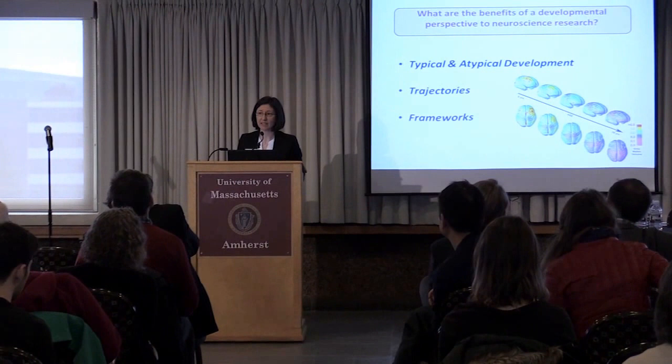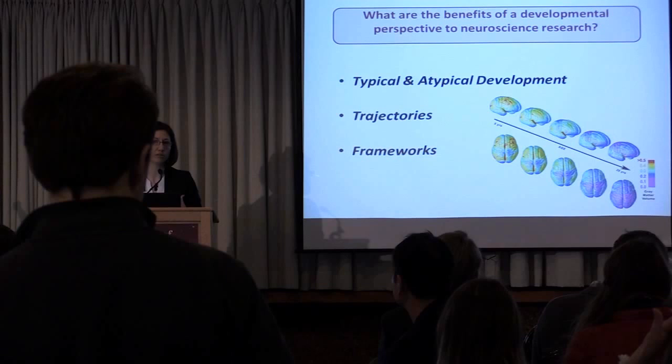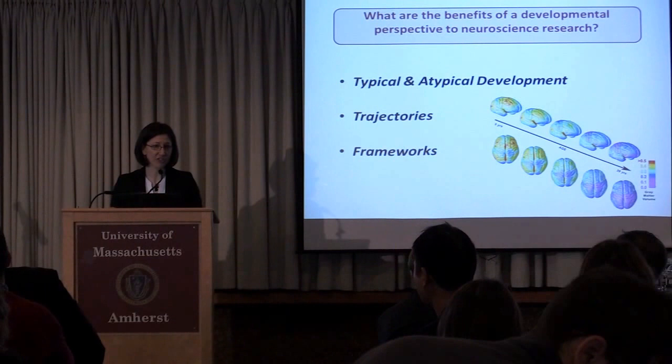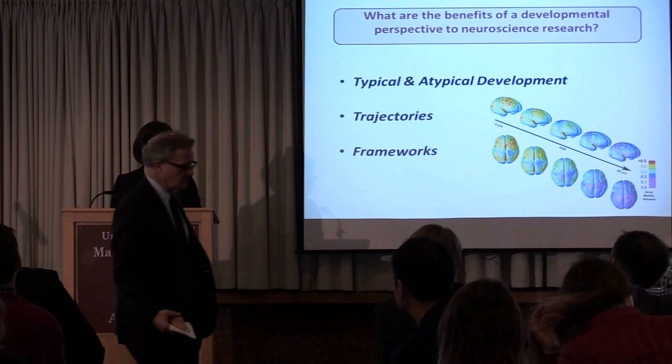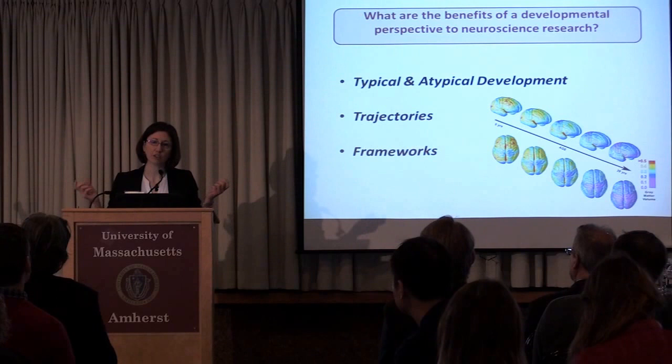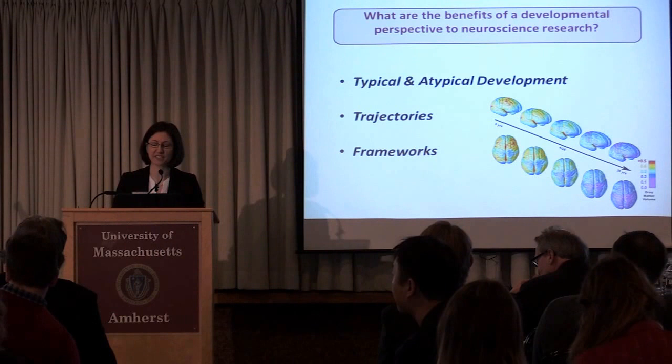One framework is understanding fundamental mechanisms of how typical adaptive functioning — cognitive, physical, social, and emotional development — emerges, and then we can also ask what happens when those processes go awry. We talk about this in terms of typical and atypical research having a reciprocal function, and although people may be grounded in one starting point versus the other, the crosstalk between these perspectives is really driving each of these sub-frameworks forward.